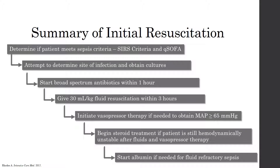Here is a summary of the initial resuscitation steps for all patients presenting with possible sepsis. First, determine if the patient meets sepsis criteria, including the SIRS criteria and qSOFA. Second, attempt to determine the site of infection and obtain cultures. Third, start broad-spectrum antibiotics within one hour. Fourth, give 30 mL per kg of fluid resuscitation within three hours. Fifth, initiate vasopressor therapy if needed to obtain a MAP greater than or equal to 65, with the first-line agent being norepinephrine, adding vasopressin or epinephrine if needed. Sixth, begin steroid treatment — usually hydrocortisone — if the patient is still hemodynamically unstable after fluids and vasopressor therapy. And lastly, start albumin for fluid refractory sepsis if needed.